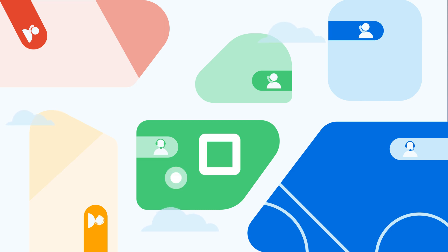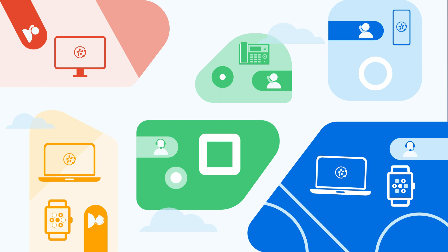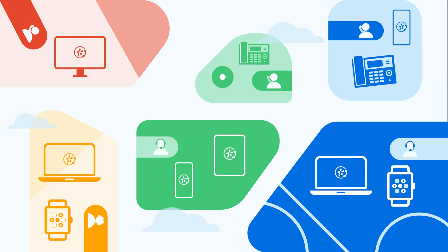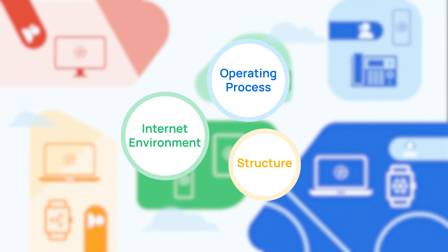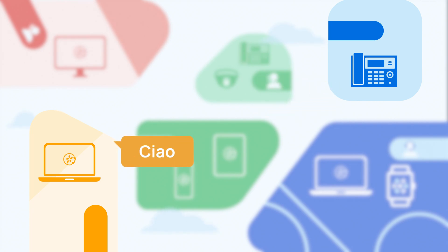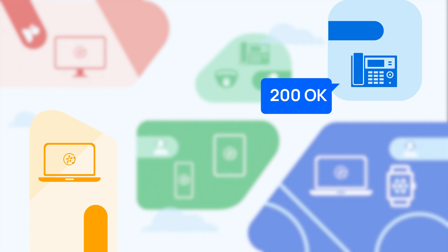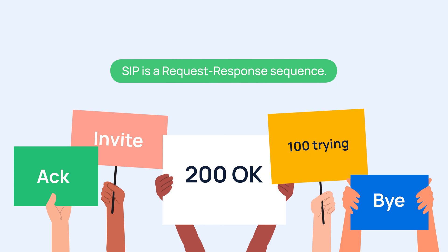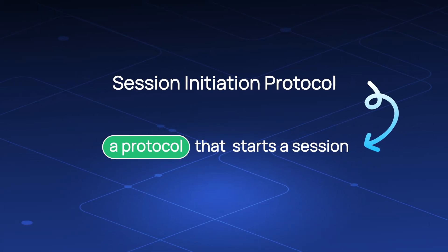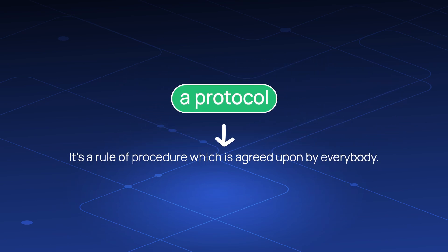In many cases, within a session, the participants are likely located in very different places using various types of devices — like computers, smartphones, tablets, IP phones, and IP cameras. Their internet environment, operating processes, and structure are likely to be very different. So, for them to interact like we showed in our previous example, we need to guarantee that all the devices are using the same language. And this language is SIP. We can think of SIP as a language for devices to communicate with each other, just like human language. SIP is a request-response sequence — every sentence and every word of it is standardized and globally acknowledged. That's why we call it a protocol: it's a set of procedures agreed upon by everybody.